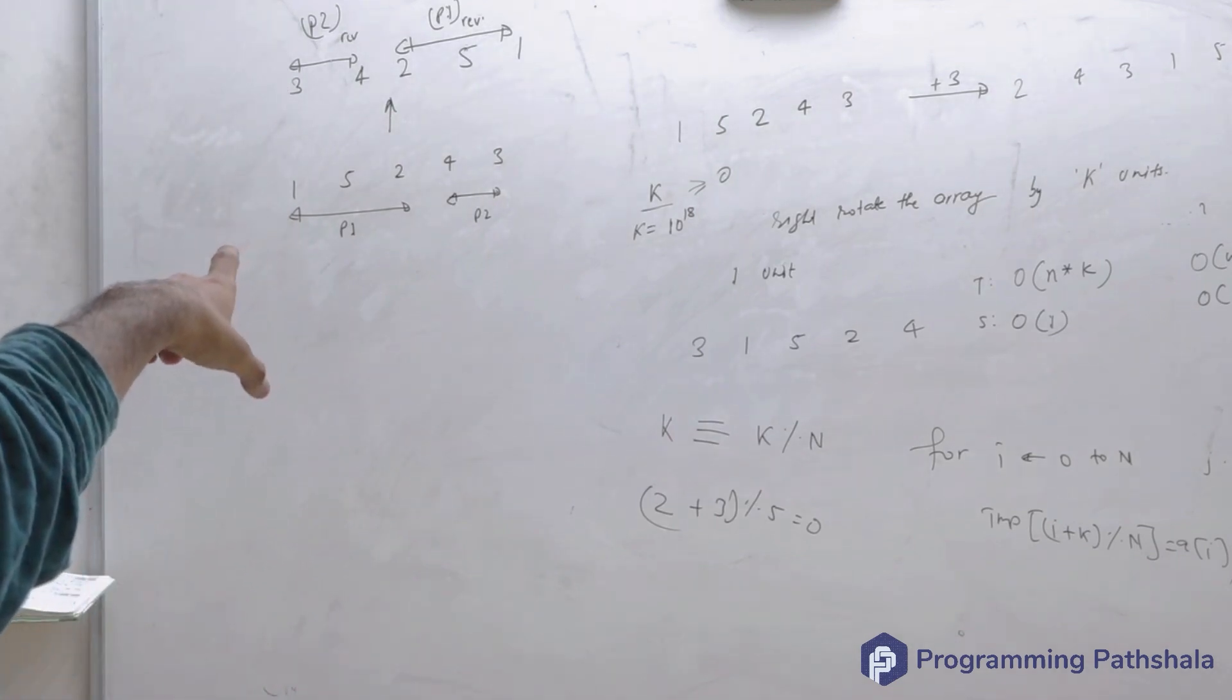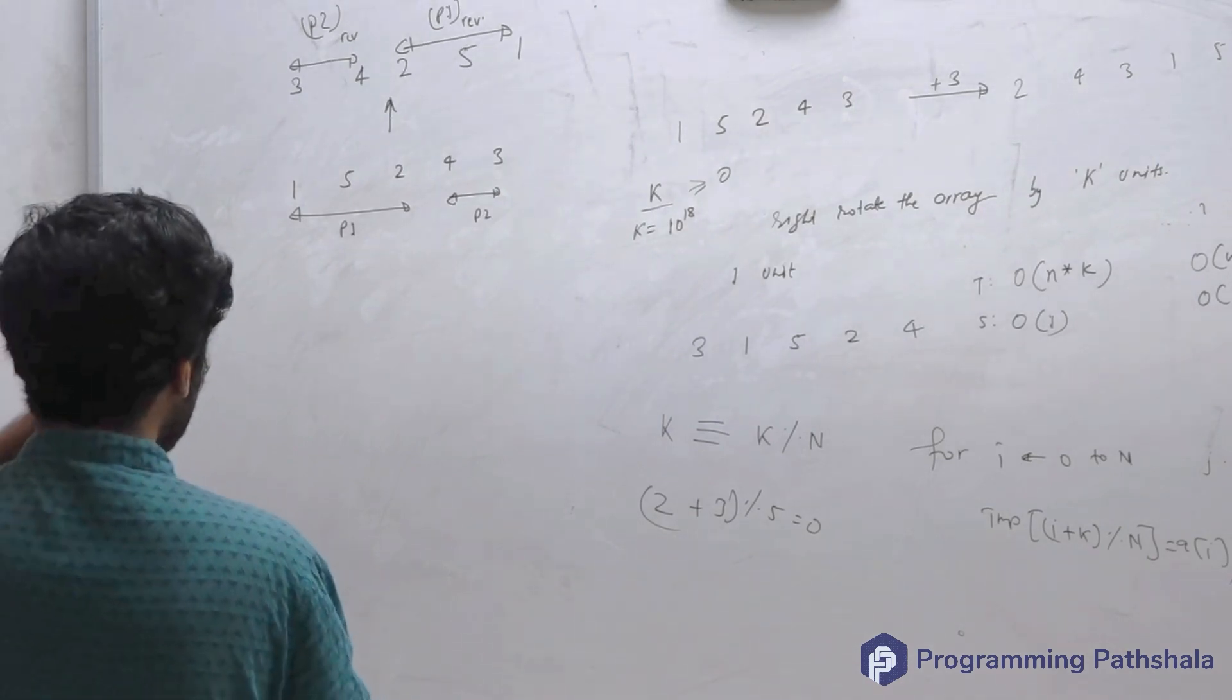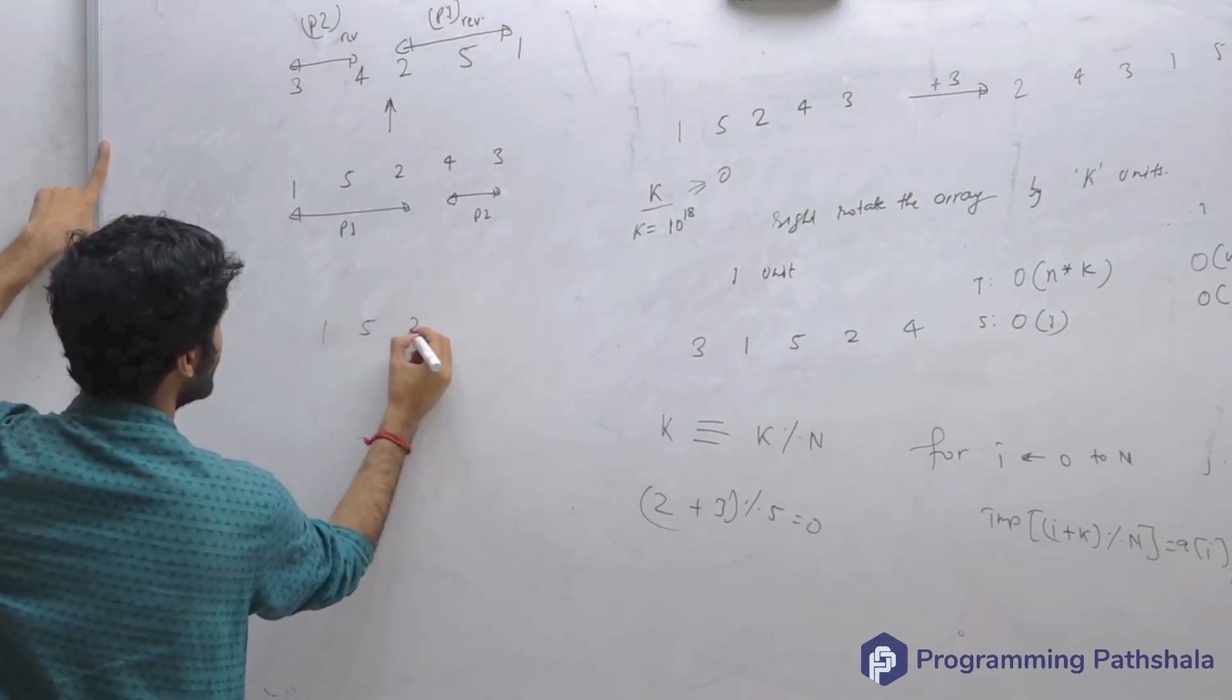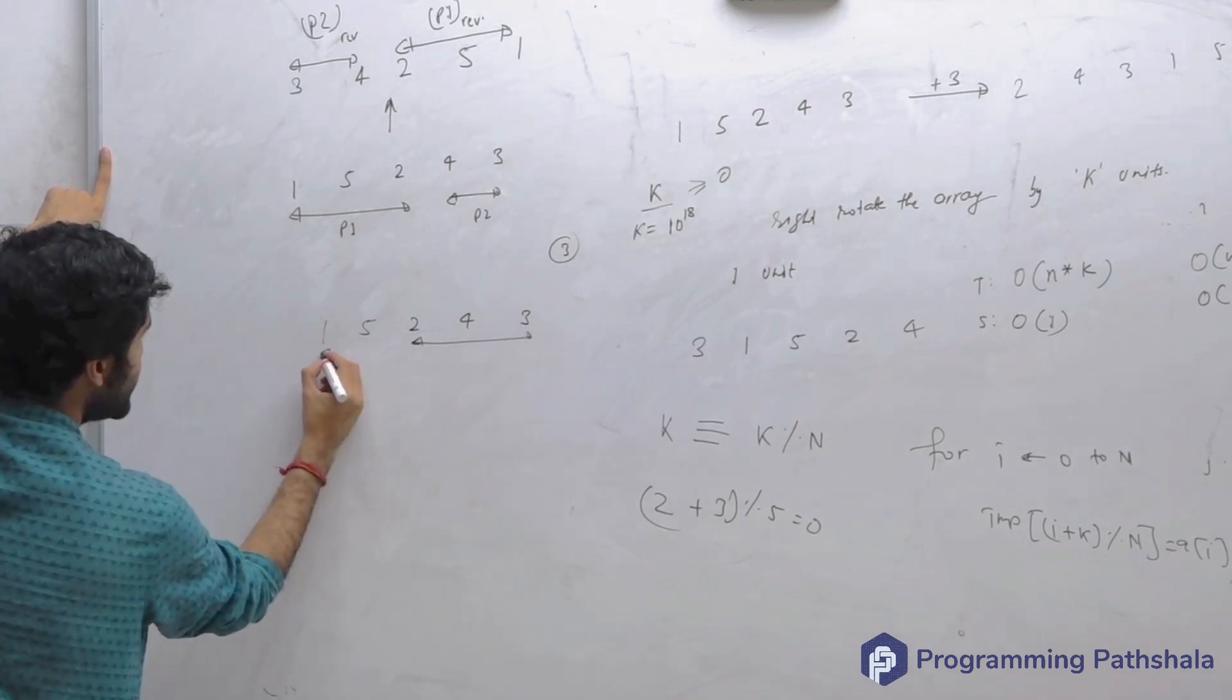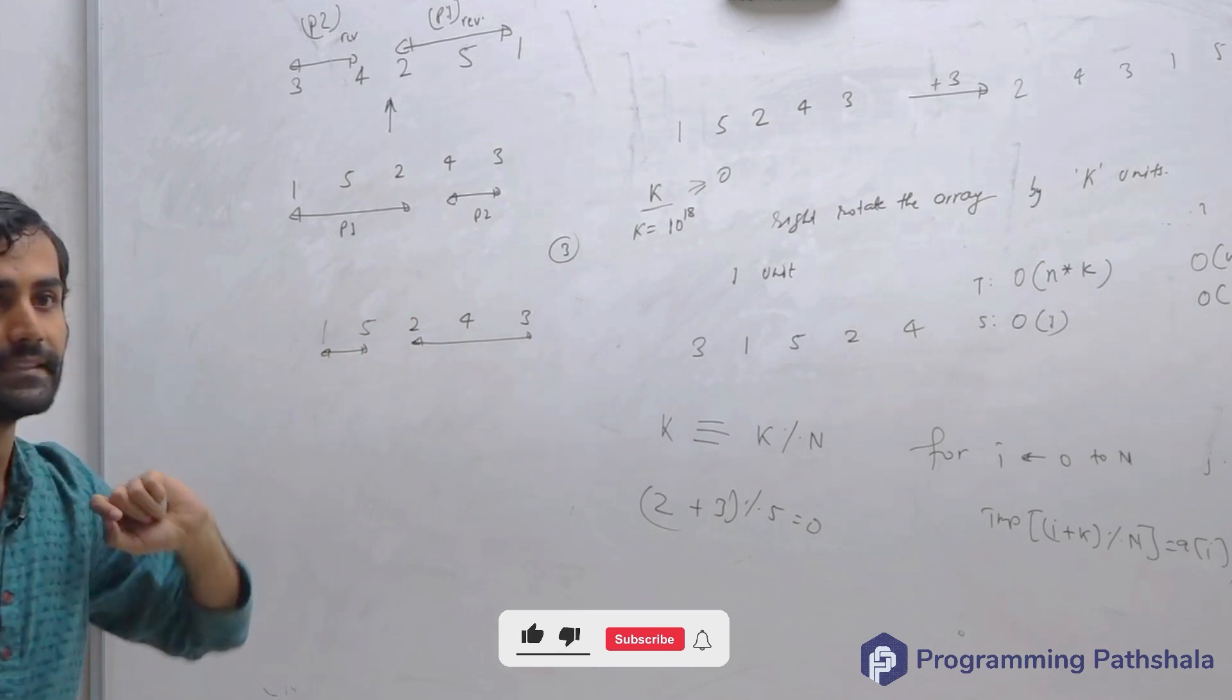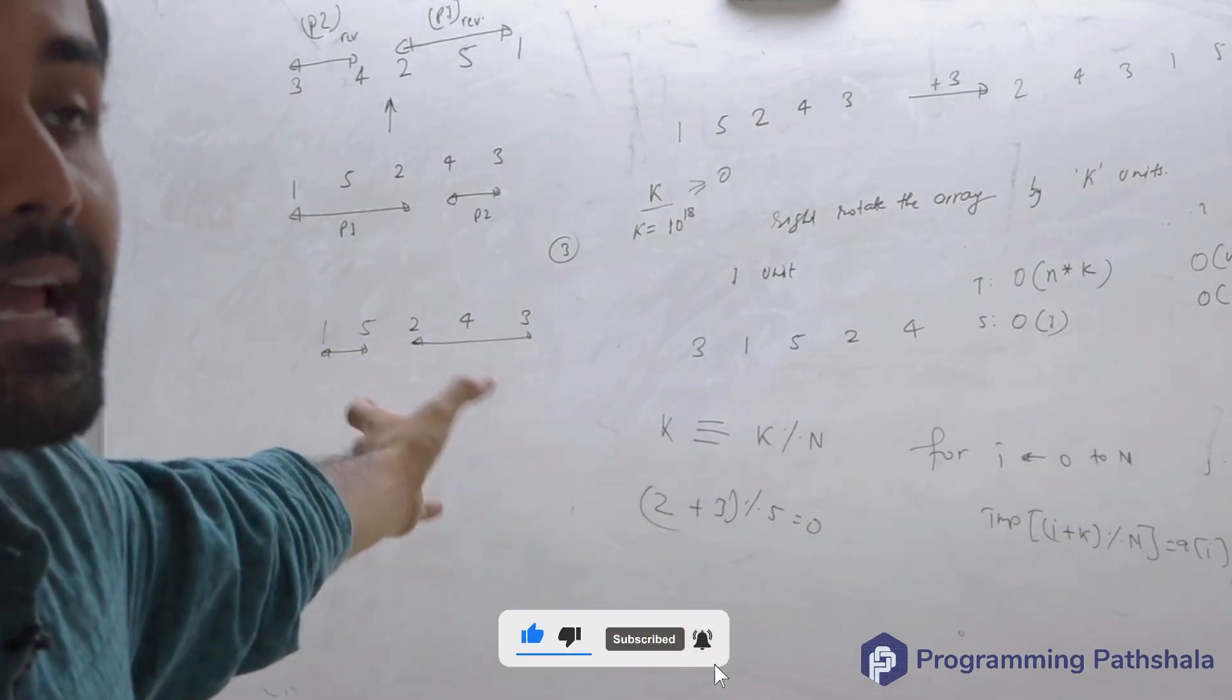If you understand this, then your job becomes very easy. If somebody asks you to consider this array 1, 5, 2, 4, 3 and perform a rotation of 3 units, then you have this portion and this portion. So you have a portion of length k and you have remaining portion of length n minus k.